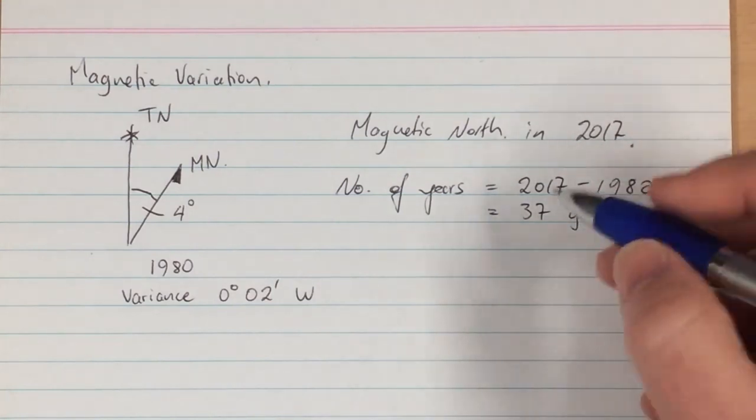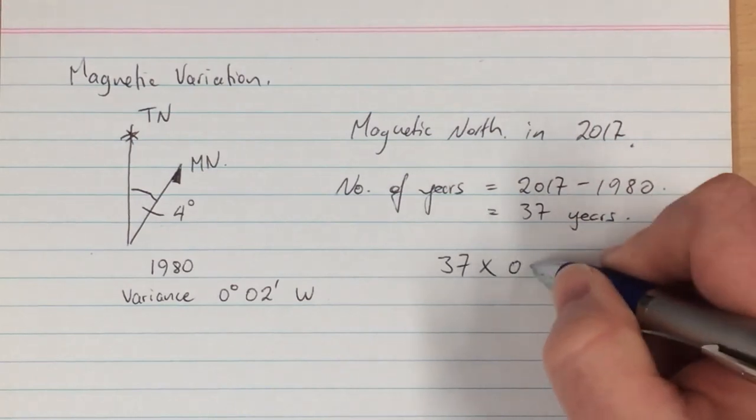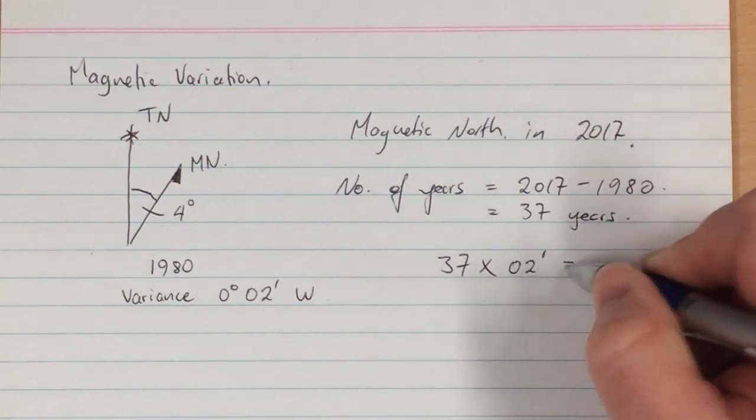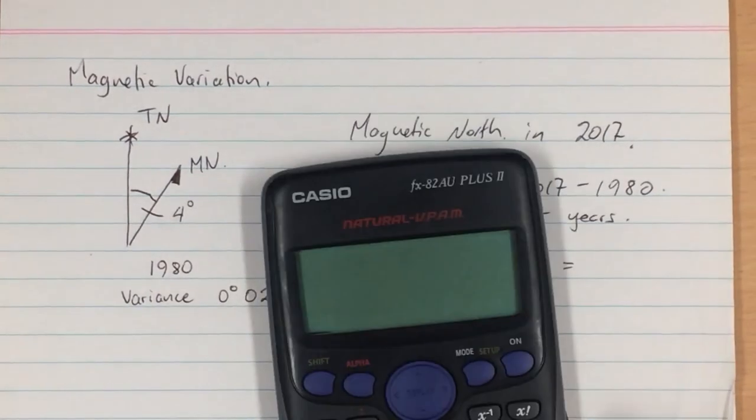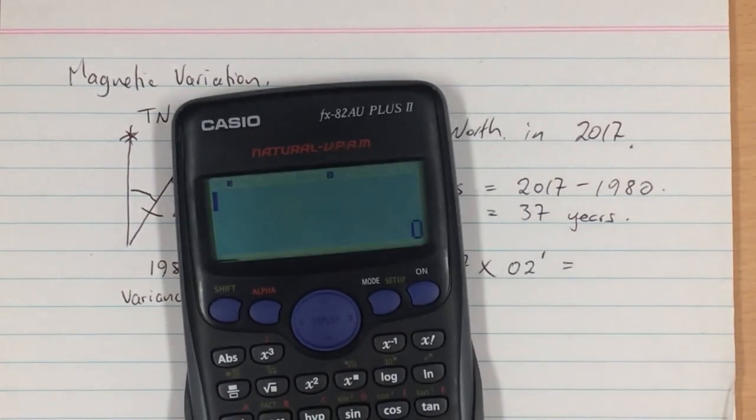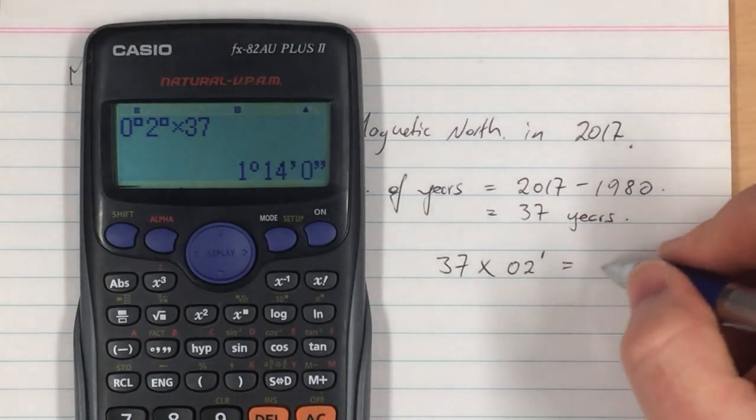We can then calculate the variance by multiplying 2 minutes by 37 years. The best way to do this is just to use your calculator. Remember to enter minutes as 0 degrees 2 minutes multiplied by 37 and you get 1 degree 14 minutes.